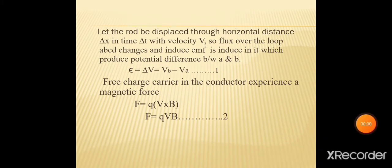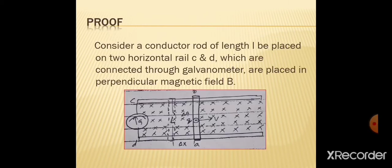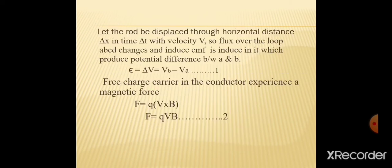Free charge carriers inside the conductor experience a magnetic force۔ اس conductor کے اندر جو free charge carriers ہیں وہ magnetic force کو experience کریں گے۔ اس کا relation ہے: F = q(v × B)۔